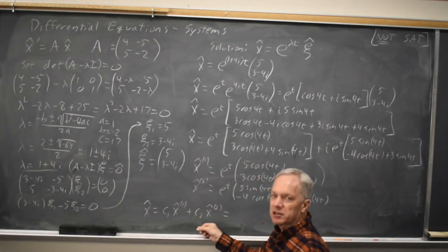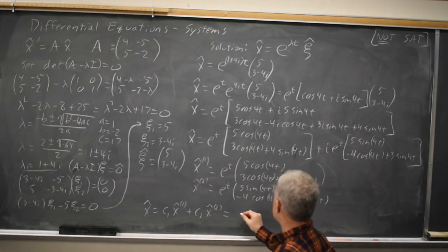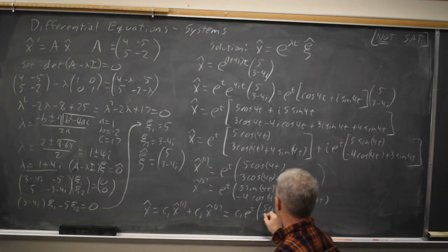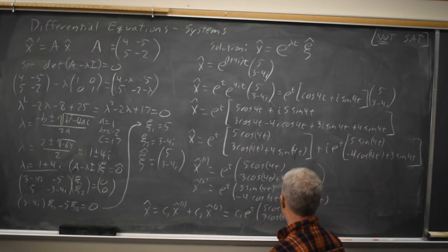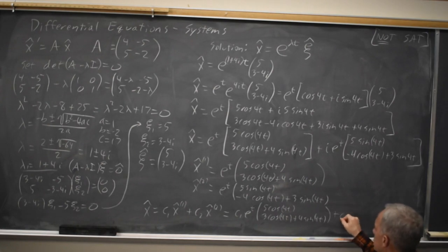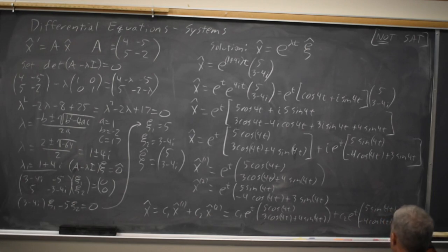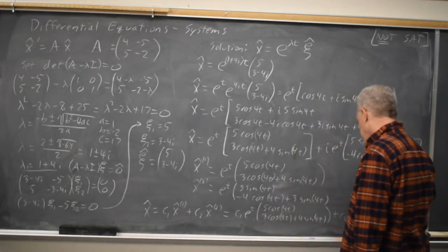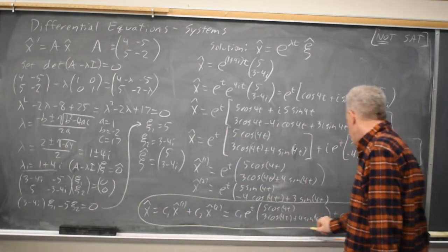Your general solution is x equals c1 x1 plus c2 x2, since this is a linear system. Any linear combination of solutions is also a solution. So I have c1 e to the t times the vector 5 cosine 4t, 3 cosine 4t plus 4 sine 4t, and then plus c2 e to the t times the vector 5 sine 4t, negative 4 cosine 4t plus 3 sine 4t. And this is the general solution.